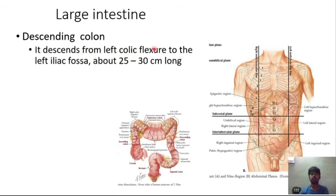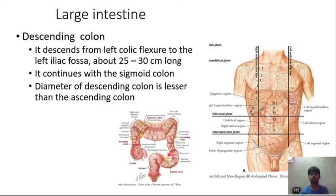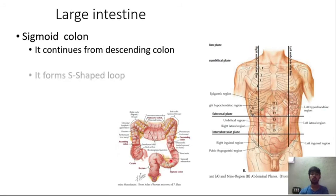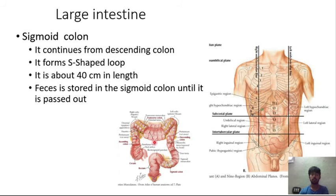The descending colon descends from the left colic flexure to the left iliac fossa, is about 25 to 30 centimeters long, and continues as the sigmoid colon. Its diameter is smaller than the ascending colon. The sigmoid colon is a continuation of the descending colon forming an S-shape, about 40 centimeters in length; feces prepared in the large intestine are stored here until passed through the rectum.